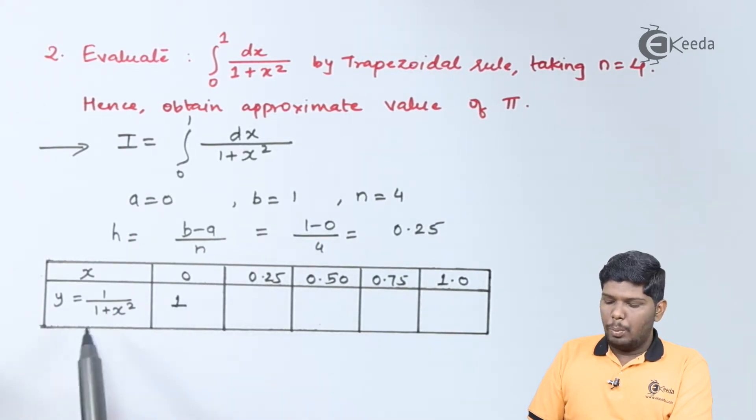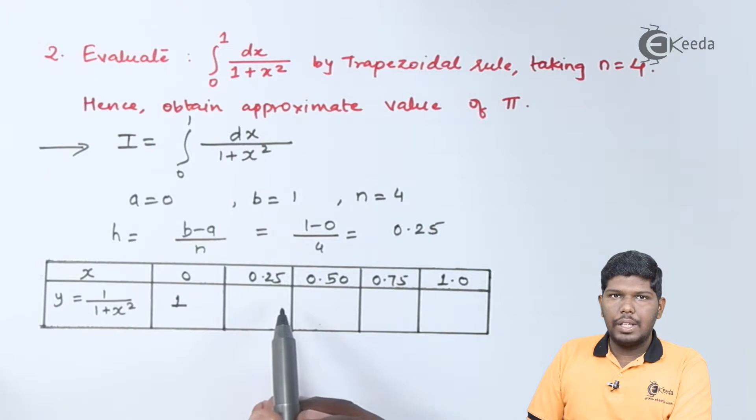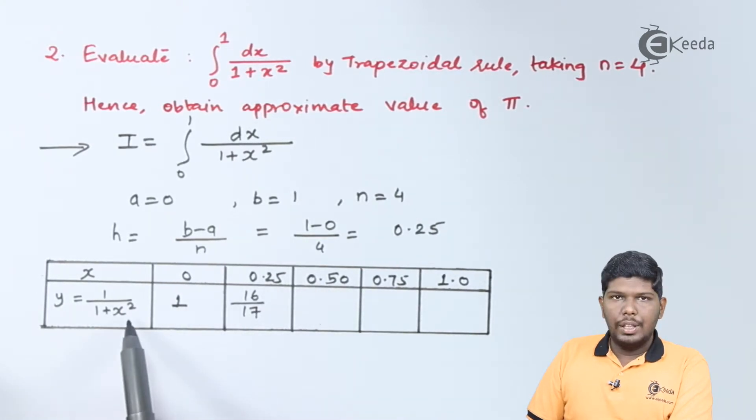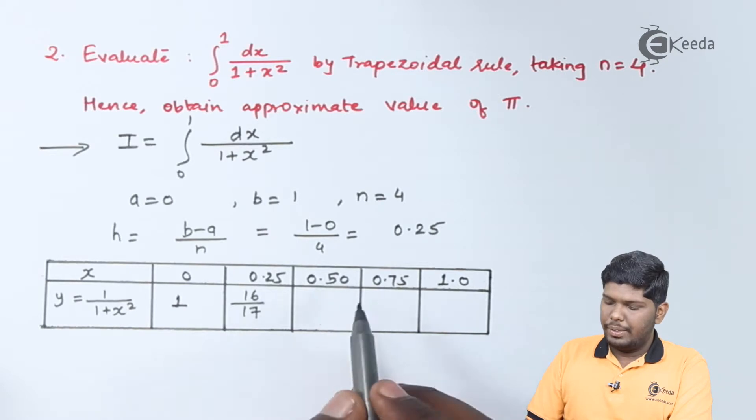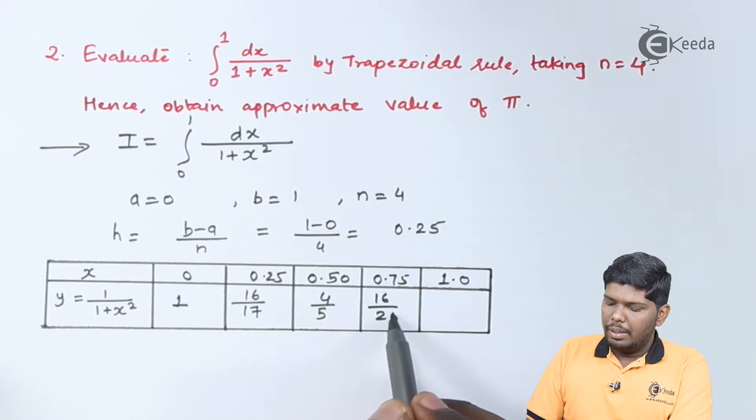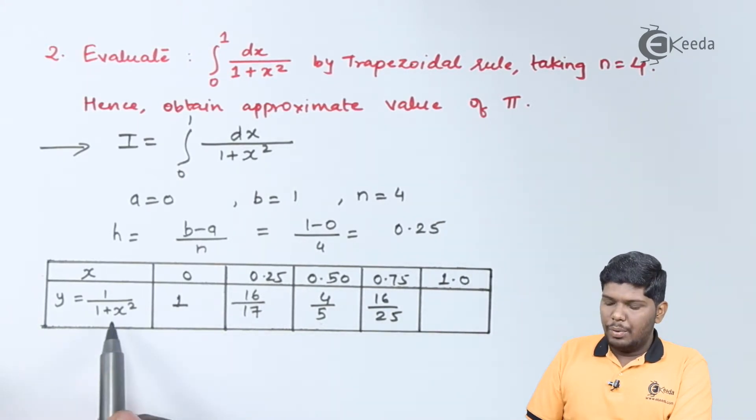If we substitute x as 0.25, we will get 16 upon 17. If we substitute x as 0.50, we will get 4 upon 5. For 0.75, the value will be 16 upon 25. And if we put x as 1, we will get 1 upon 1 plus 1, that is 1 by 2.